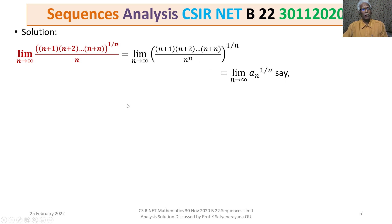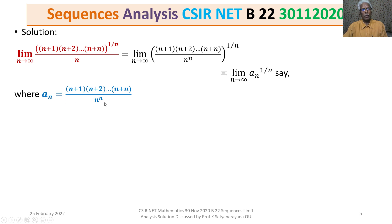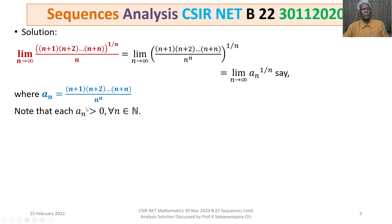We define a_n as the product (n+1)(n+2)···(n+n) divided by n^n. Note that each a_n is positive for all n belonging to the natural numbers.